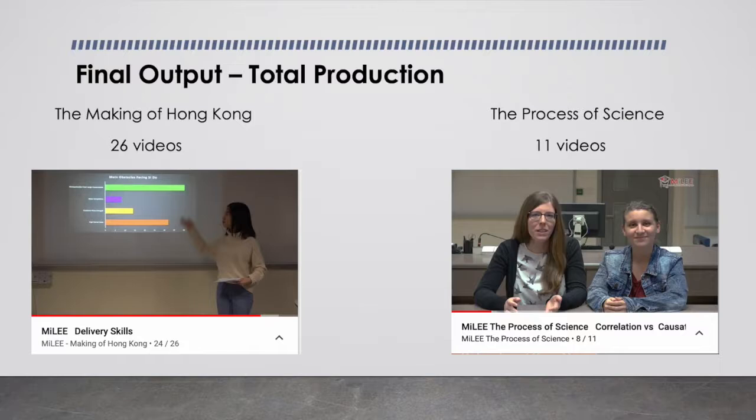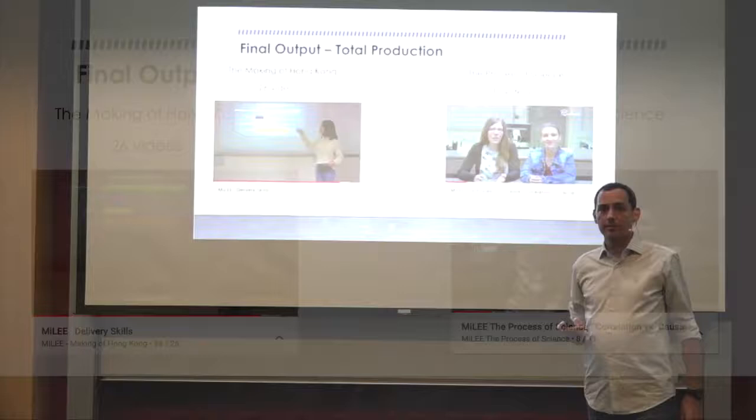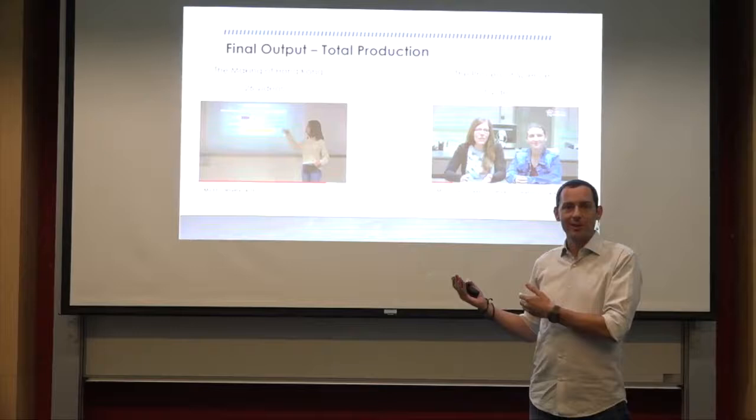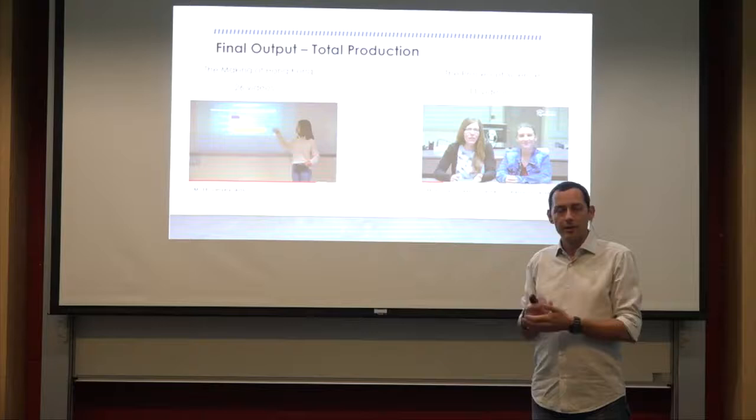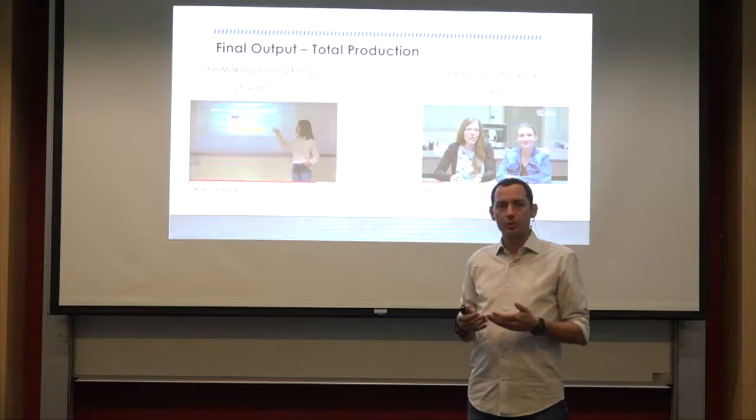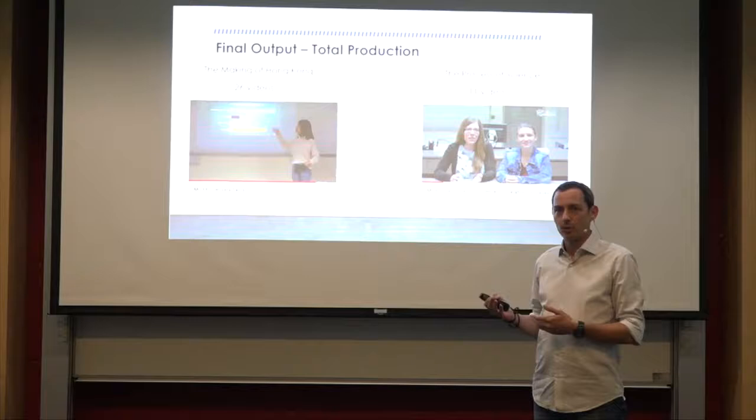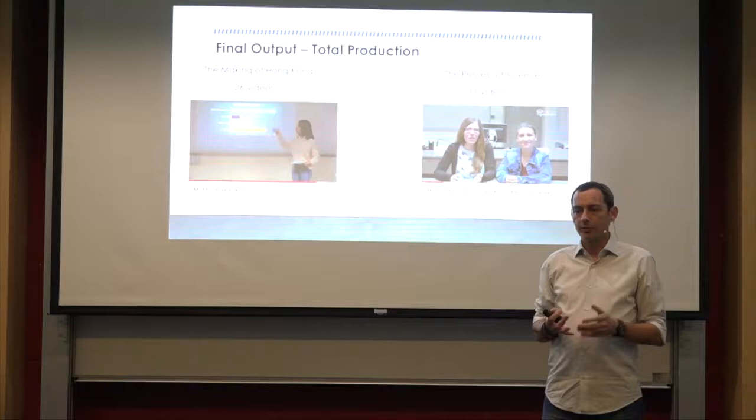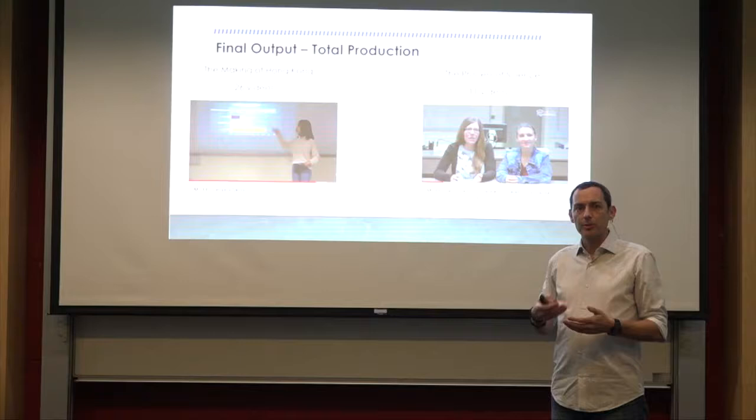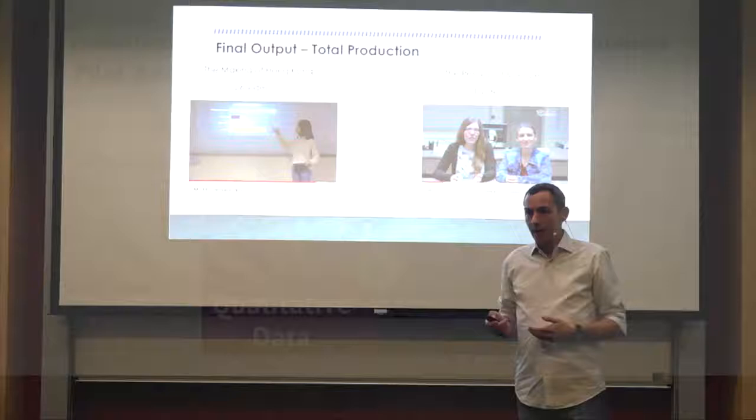Now, as you can see up here, we created videos for both the making of Hong Kong and the process of science. In total, we created 26 videos for the making of Hong Kong, but only 11 for the process of science. You might ask yourself, why is there such a big discrepancy between the number of videos for each course? And that basically comes down to the content of each course. The making of Hong Kong is more of an academically driven course, so it has a lot of content. A lot of content is introduced in the lectures and developed further in the tutorials of the course. The process of science is more practical. So, they will go through some theories in the classroom, but then they will also bring the students on field trips, conduct experiments. So, the level of input that was needed from us was considerably less.